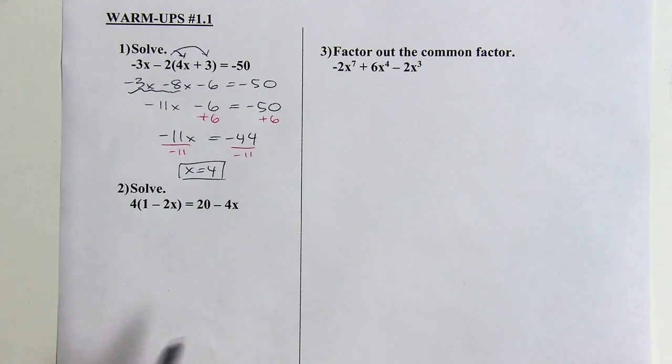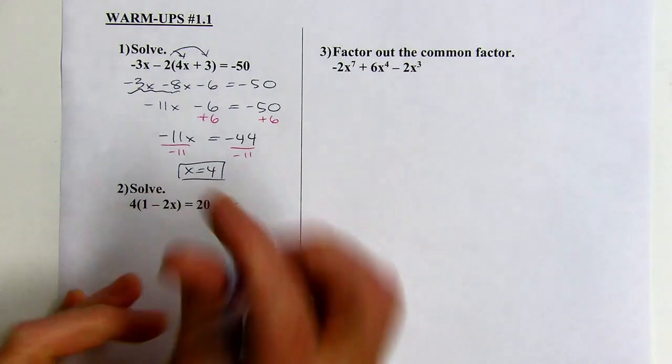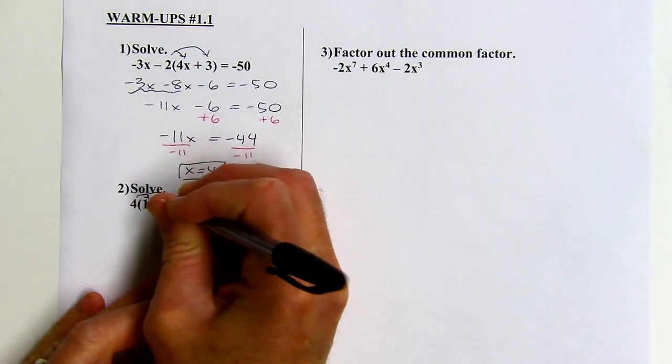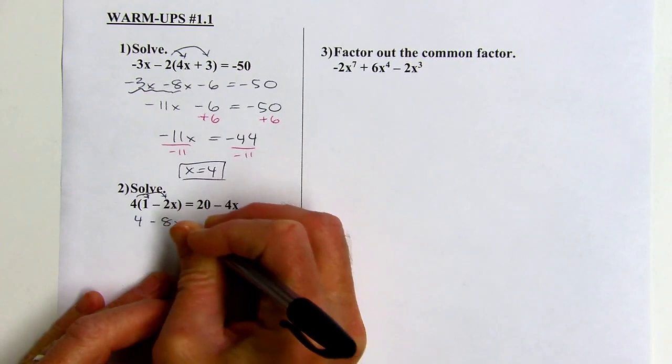Okay, so same kind of process on this next one. I want to first get rid of the parentheses by distributing the 4.